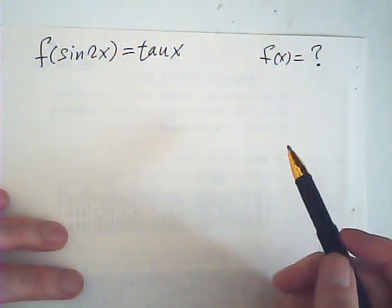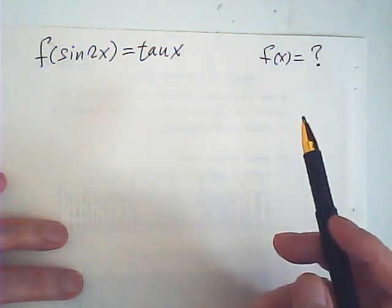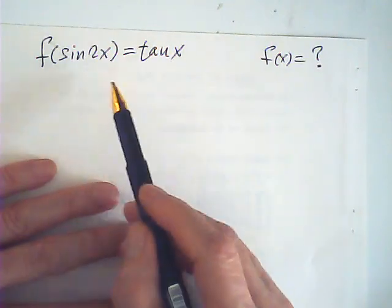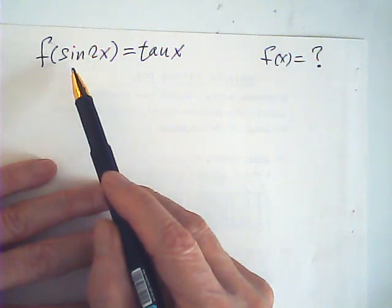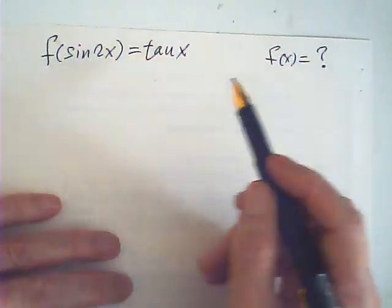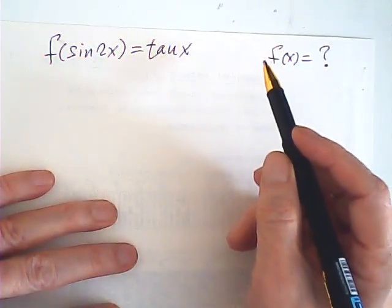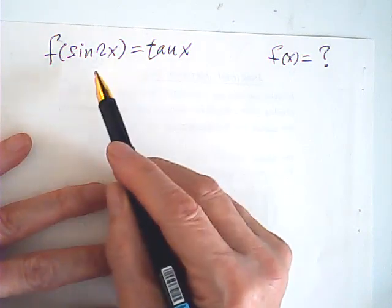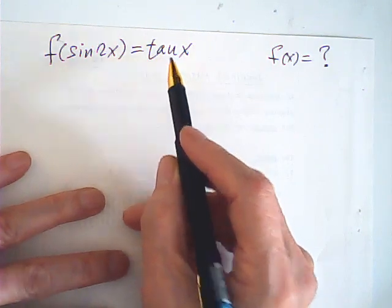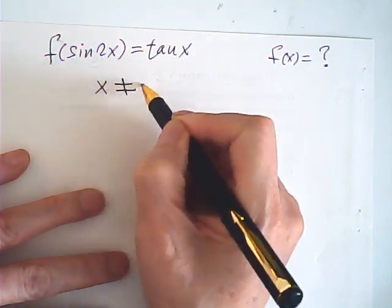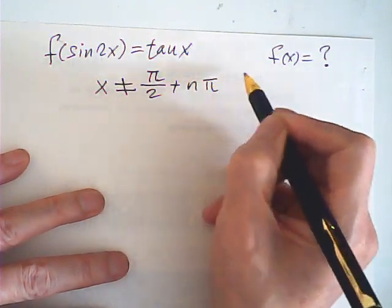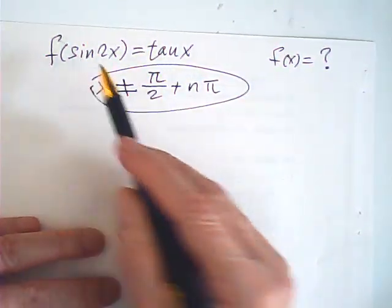I saw this question on YouTube and I have two methods I would like to share with you. Given f of sine 2x is tangent x, find f of x. First of all, I want to add a restriction condition for the domain, because tangent is infinity when x is π/2. Therefore, x is not equal to π/2 plus nπ. I want to add this to the domain of this function.